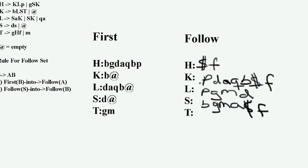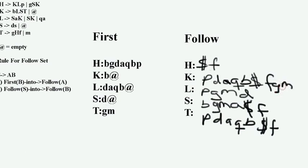Then FOLLOW(k) goes into FOLLOW(t), so we copy everything from FOLLOW(k) into FOLLOW(t). T does not contain an empty, so we're done there. Then FOLLOW(l) goes into FOLLOW(k): we get p and g — g, m, and d are already there, p is already there, so g and m are the only new things being added.